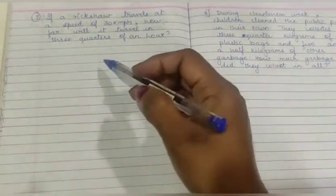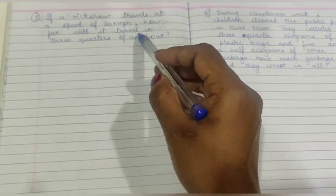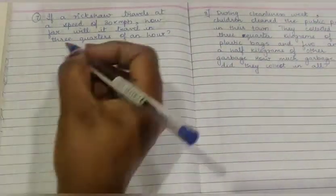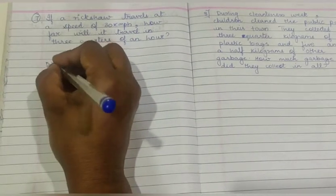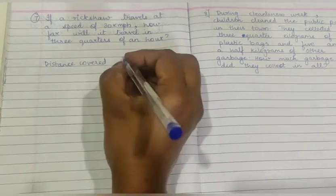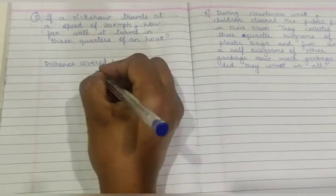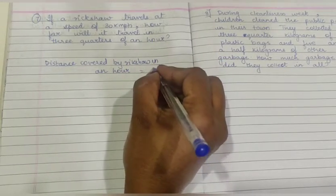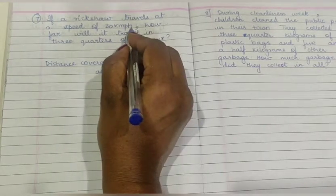Now let us move to our 7th sum. If a rickshaw travels at a speed of 30 km per hour, how far will it travel in 3 quarters of an hour? Similarly, it is like the 6th sum. So we will write: distance covered by rickshaw in an hour is equal to 30 km, because it is 30 km per hour.